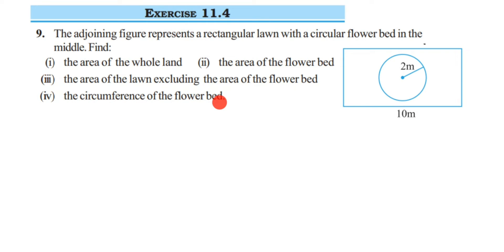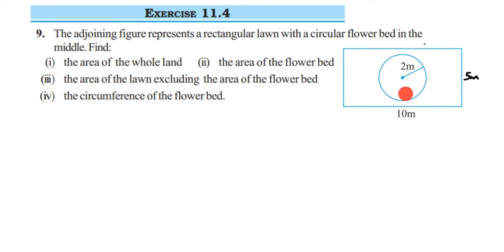From the figure, the length is 10 meters and the width is 5 meters. In the rectangular lawn there is a flower bed in the shape of a circle, and the radius of that circle is given as 2 meters. Now let's find the solutions.